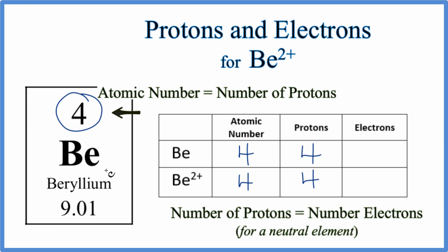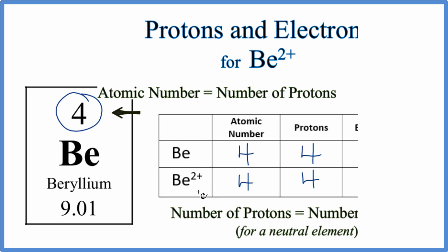That's why it's neutral — the positive and the negative are the same. So because we have four protons, we'll have four electrons. For the BE2+, though, it's a little bit different. Let's take a look at a visualization to help understand that.